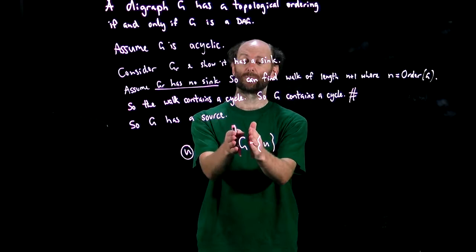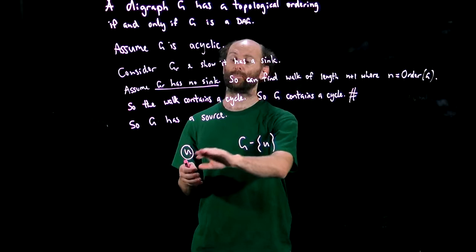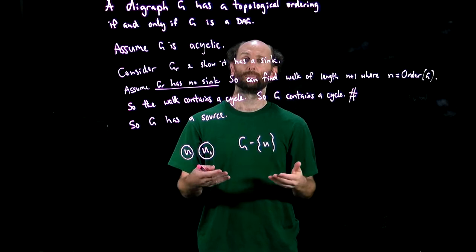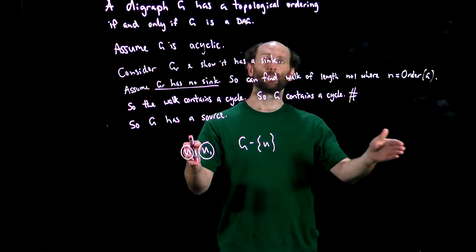If this new source wasn't a source in the original graph G, then the only arcs that would have come into it would have been from our original source u. So we can safely put this new source, call it u_1, next in line and so on, each time deleting the source we find, reducing the size of the digraph by one node and adding it to our order, so slowly building up an order source by source.